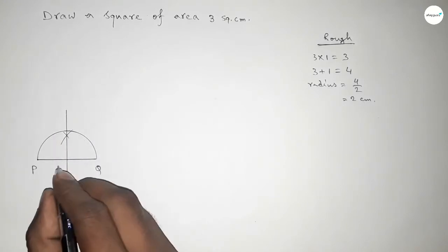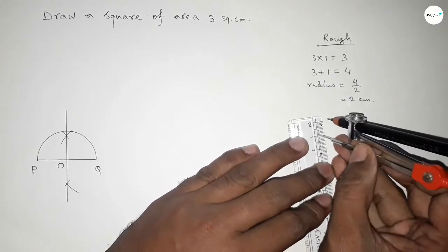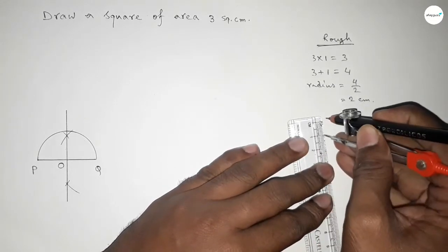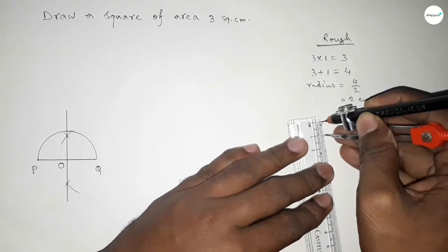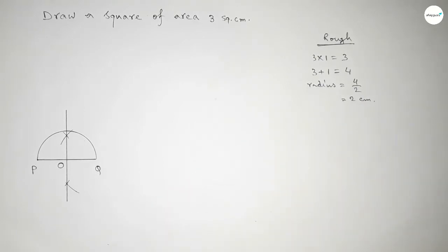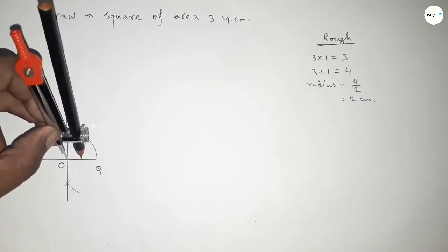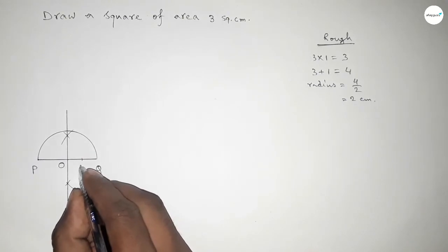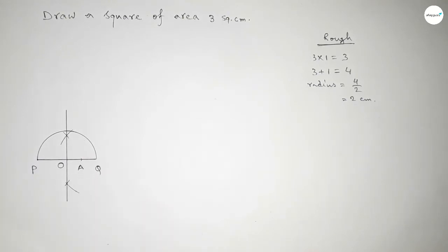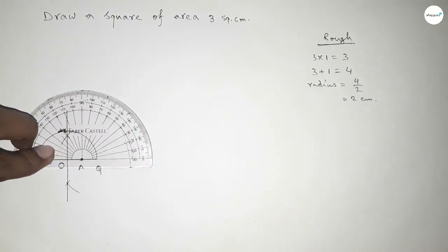This is point O. Now taking a length of 1 centimeter using a scale, putting the compass on point O and cutting here. This gives us point A. Now we have to draw a 90-degree angle at point A using a protractor.